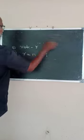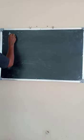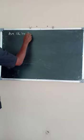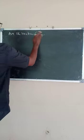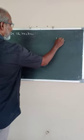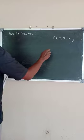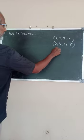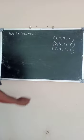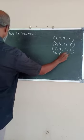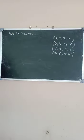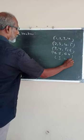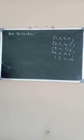The problem: are the vectors (1, 2, 3, 4), (2, 3, 4, 5), (3, 4, 5, 6), (4, 5, 6, 7) linearly independent or not?